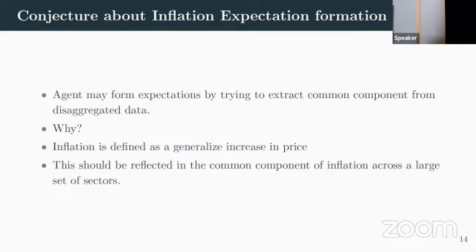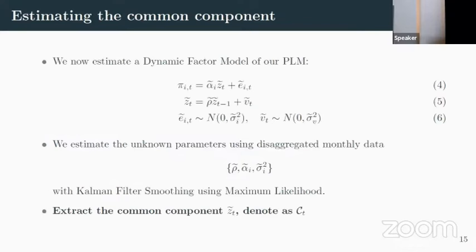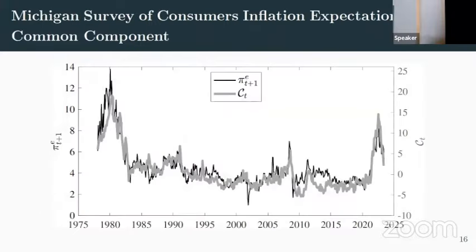We look at what it would do if you just look at disaggregated data and pull the common component — how close is it to people's expectations? We get some disaggregated data, a whole set of series, and think of people potentially seeing disaggregated data as reflecting some autoregressive common component with idiosyncratic shocks, trying to infer the common component by filtering through. If you take the disaggregated data and do this exercise, you get a series for the common component. This maps pretty well to expected inflation — it looks like if people interpret things as coming from a common component, that captures a lot of the way they might be forming expectations.